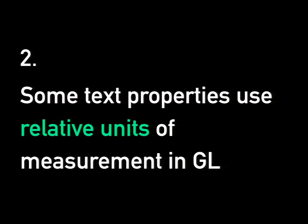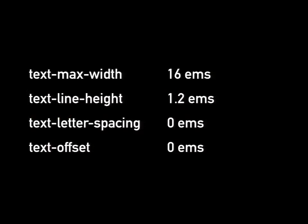A quick one: some text properties in GL use relative units — specifically ems, where one em equals the font size. This is a really great thing that saves a lot of time; in many cases you don't even have to write a function or change the value across different zoom levels because it's already being proportionally changed. But since that's not true in Carto CSS, if you're converting values there's not necessarily a direct parallel — you'll probably have to hand-convert them.